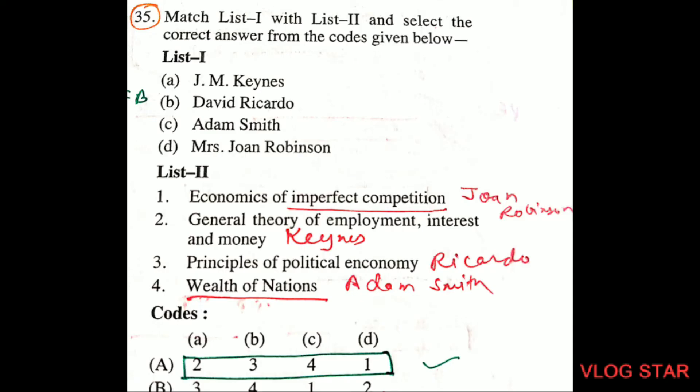Question number 35, matching: J.M. Keynes gave the General Theory of Employment, Interest and Money. David Ricardo gave Principles of Political Economy. Adam Smith gave Wealth of Nations. Joan Robinson gave Economics of Imperfect Competition. Option A is the right answer.